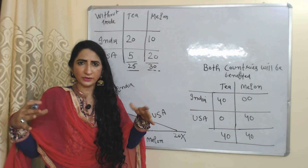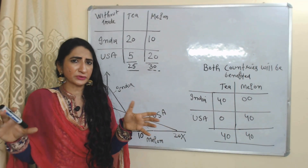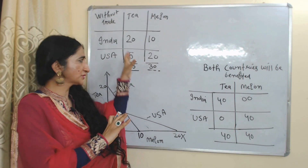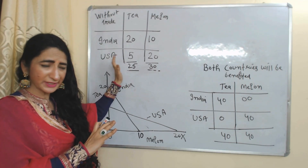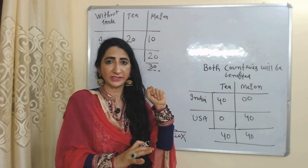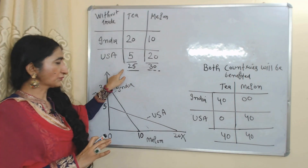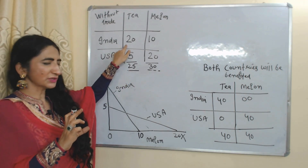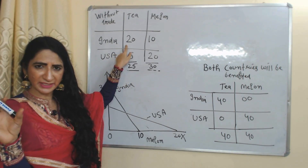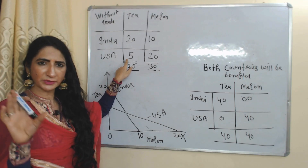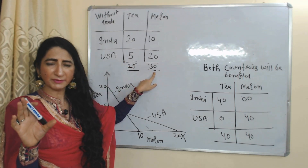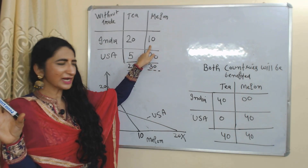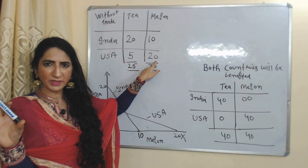What is the benefit of doing trade according to absolute cost advantage? We will understand by comparing total production before and after international trade. Total production of tea before international trade was 25 units: 20 units produced by India and 5 units by USA. Total production of melon before international trade was 30 units: 10 units by India and 20 units by USA.